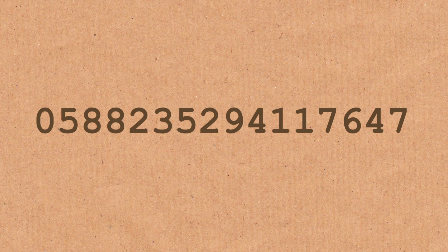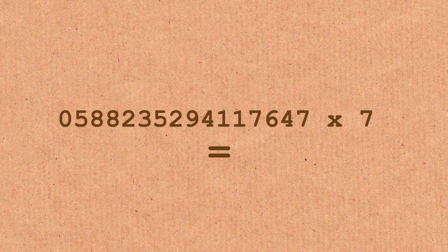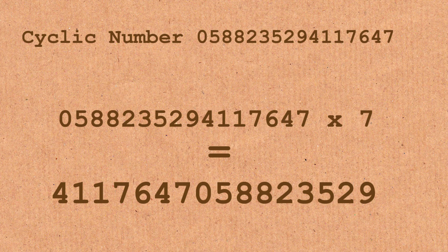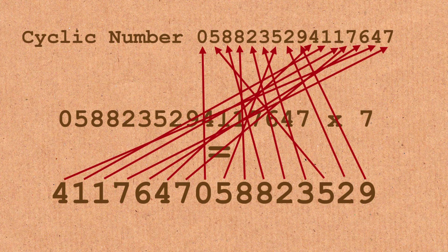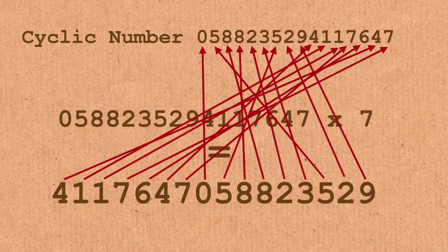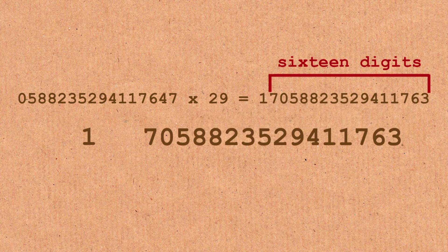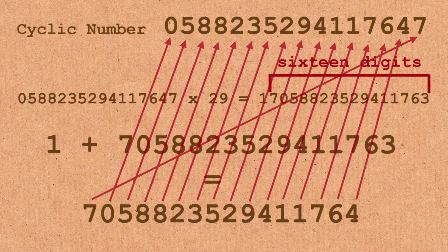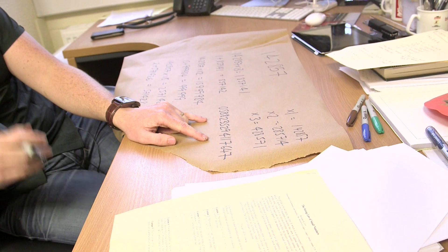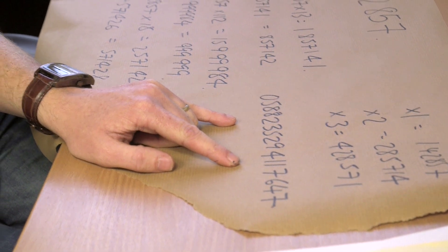This is another cyclic number. This has got 16 digits. You play the same game. You can take, in this now, you would multiply it between, what's important is the fact it's got 16 digits. So if you do multiples of 17, this goes wrong. But if you do 1 to 16, you'll get a permutation of it. And then you can play this game as well, but with 16 rather than 6 digits. If you multiply it by any multiple of 7, you always get all the 9s. If I multiply this guy, if I multiply this by 17, I'll get all the 9s.